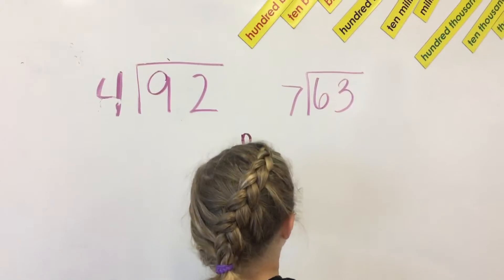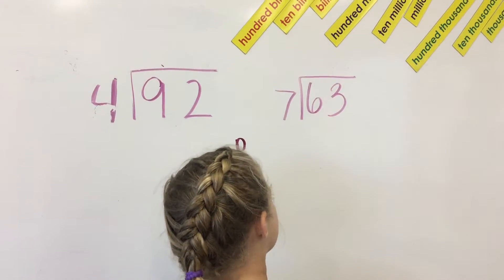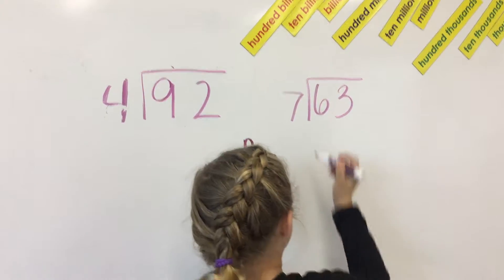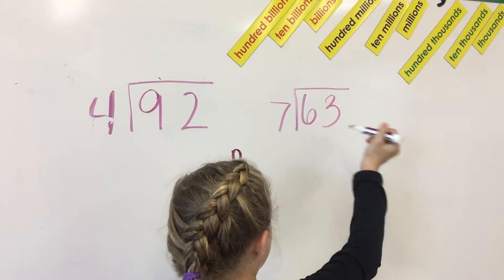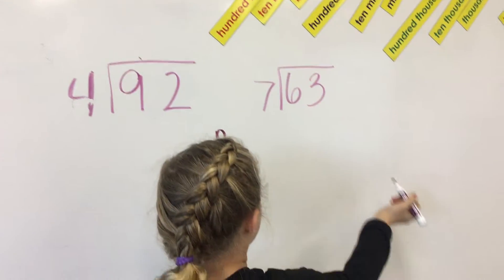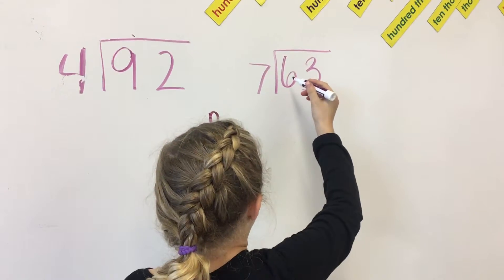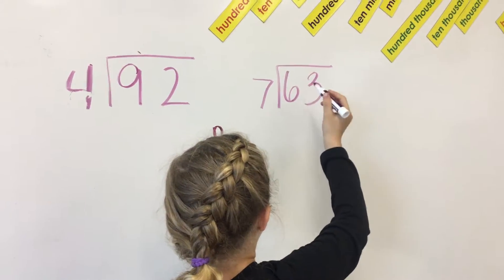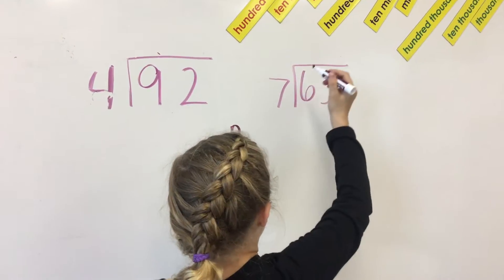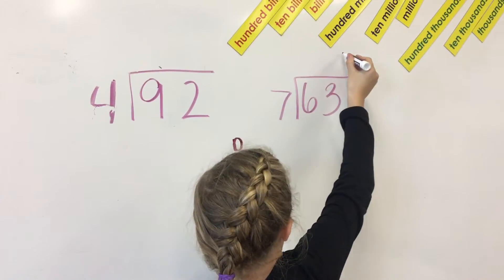7 cannot go into 6, not even once, but 7 can go into 63. So 63 divided by 7 is 9.